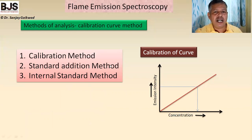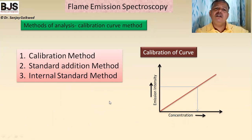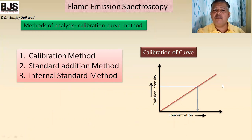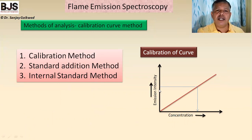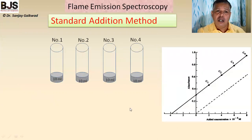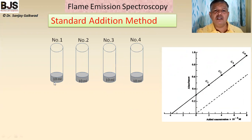For the calibration method, five standard solutions are taken and a standard graph is plotted by measuring the emission for each concentration. Then the unknown solution is aspirated and its emission intensity is measured. From that intensity and the standard graph, the unknown concentration can be found.